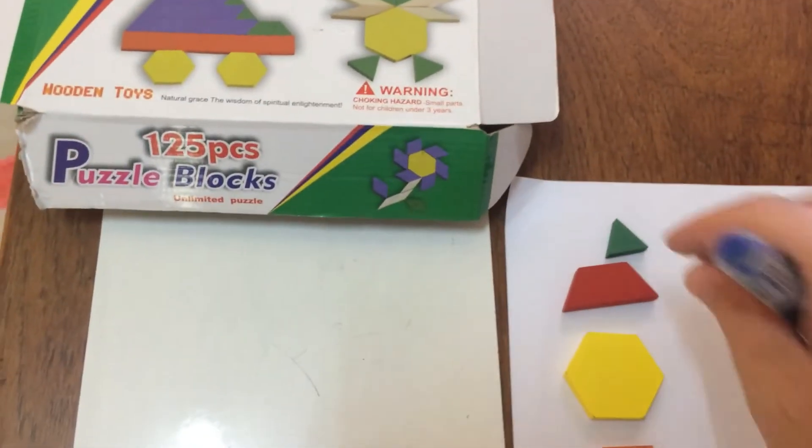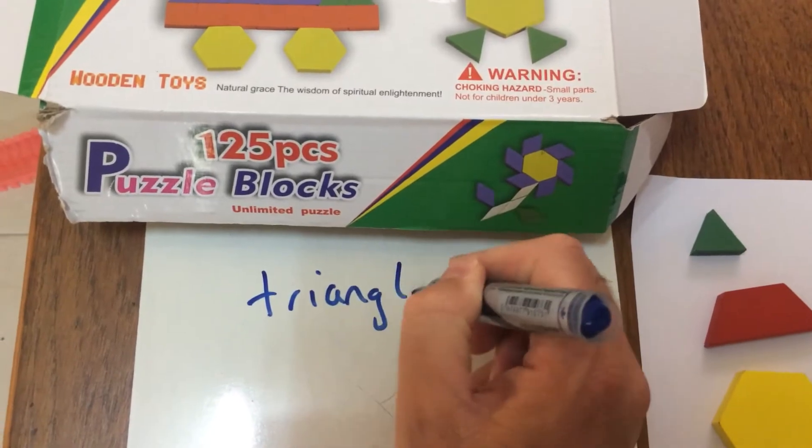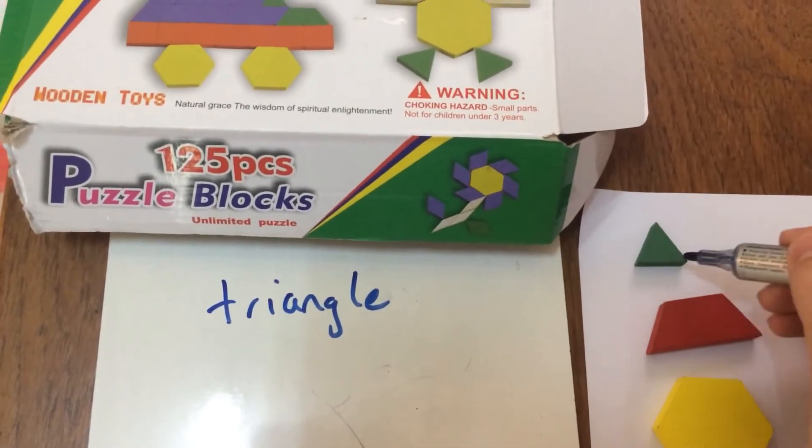Let's go through the shapes that it has. First, it's got a triangle—an equilateral triangle with three equal sides.